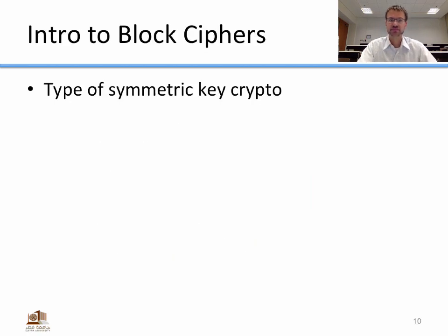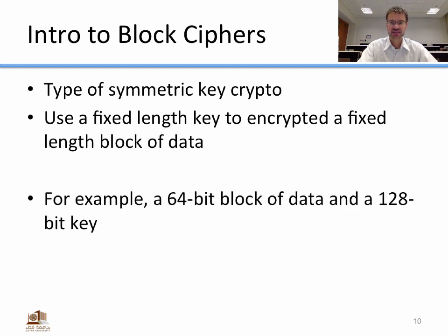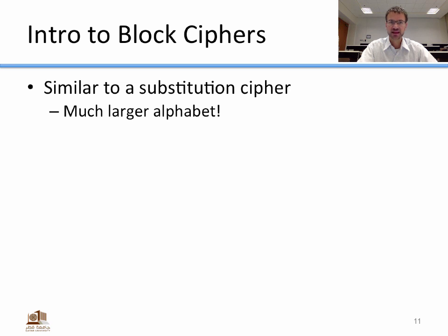Now let's look at block ciphers — another type of symmetric key crypto. Block ciphers use a fixed length key to encrypt a fixed length block of data. Unlike a stream cipher that generates key stream to XOR, a block cipher encrypts fixed length chunks of data into cipher text of the exact same length. For example, a 64-bit block of data with a 128-bit key could be the parameters for a block cipher.